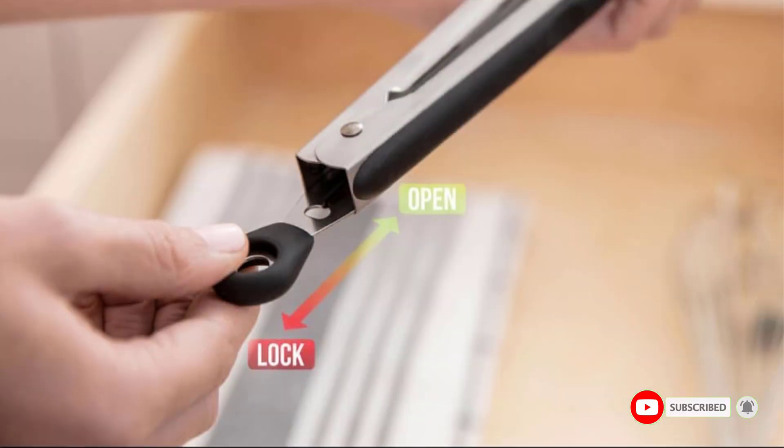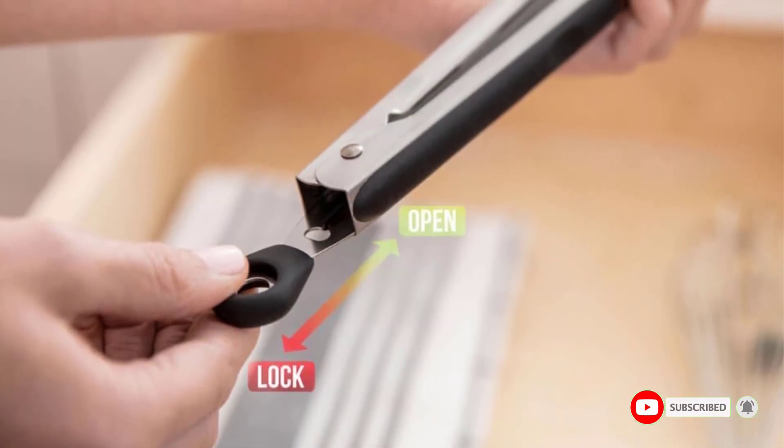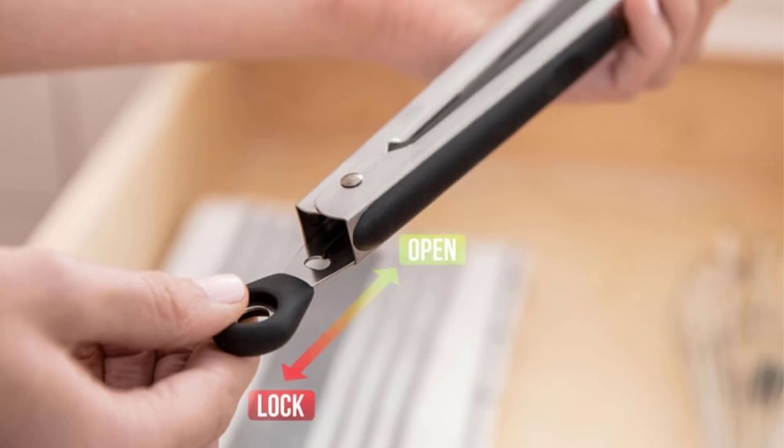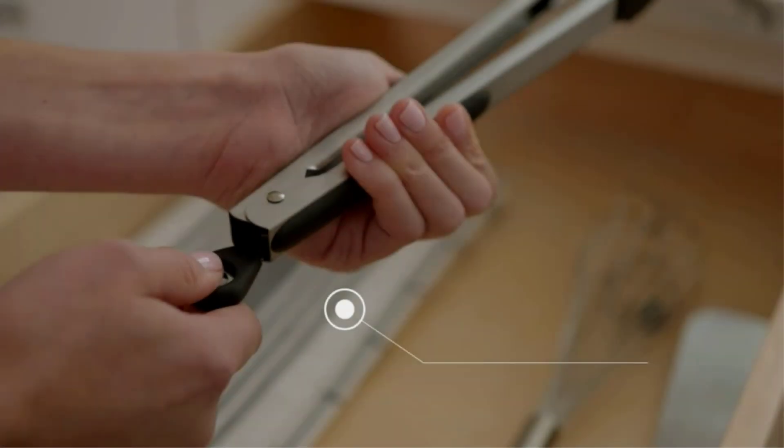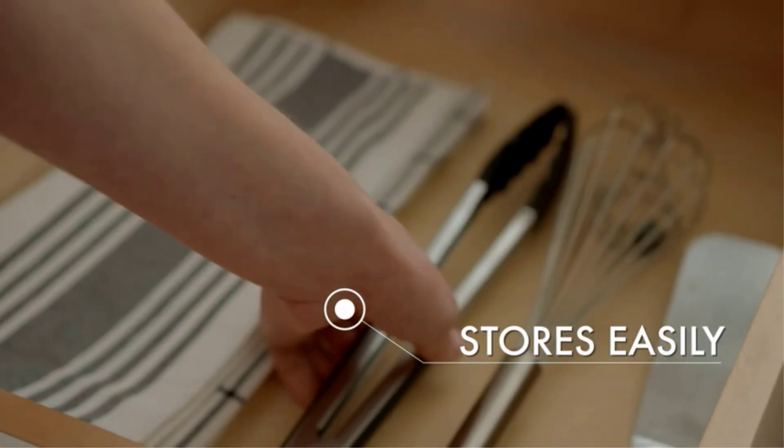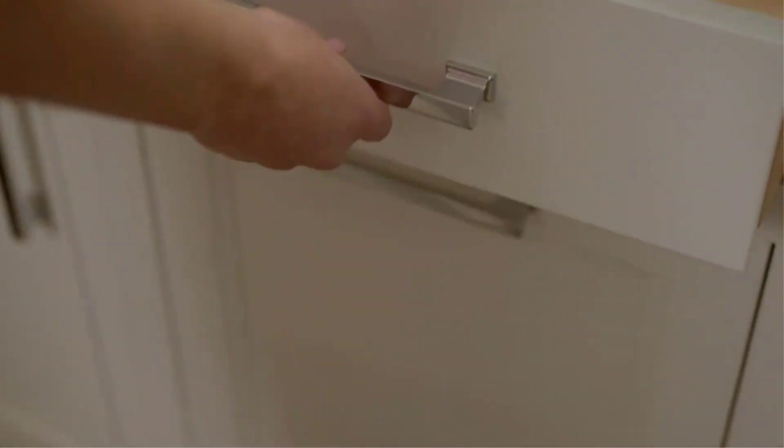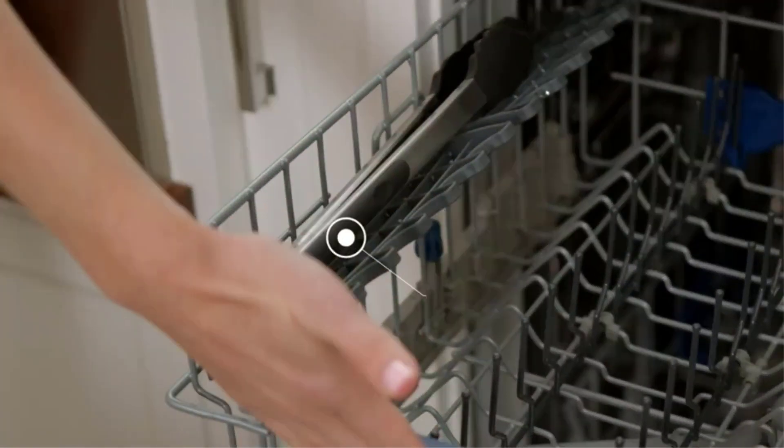Made of sturdy stainless steel, these tongs are rust-resistant and durable for long-lasting use. The easy pull-lock feature makes them easier to store in most drawers and cabinets. They are perfect for use on pans, stovetops, counters, and grills.